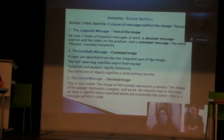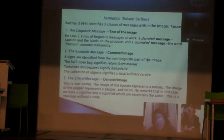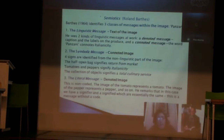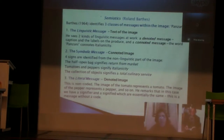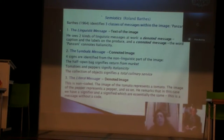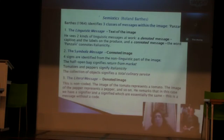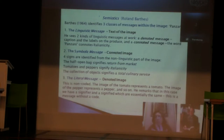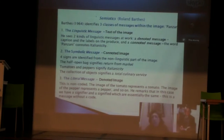In that text, he sees a denoted message and a connoted message. The denoted message is the captions and the labels on the produce, and the connoted message is the word Manzani — he connotes Italianism. So this is the linguistic message.